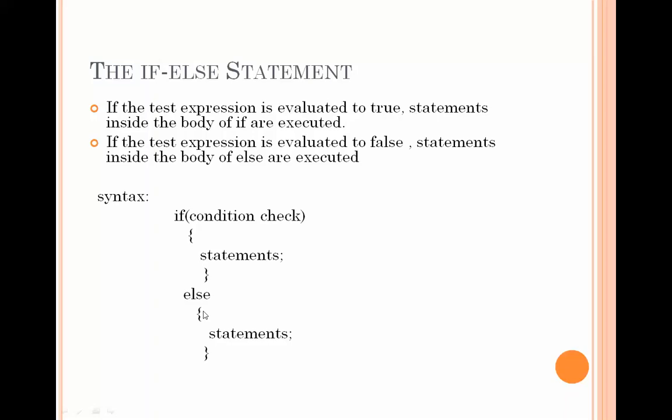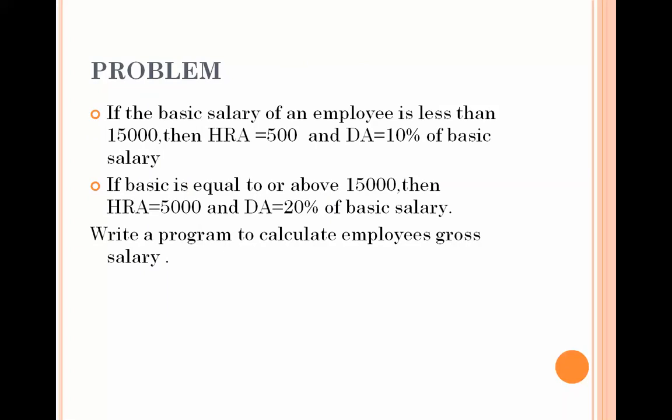Now let's take a problem and write a program. We have to calculate the gross salary of an employee. We are given HRA and DA based on the basic salary. The first condition is: if the basic salary is less than 15,000, then HRA will be 500 and DA will be 10% of the basic salary.